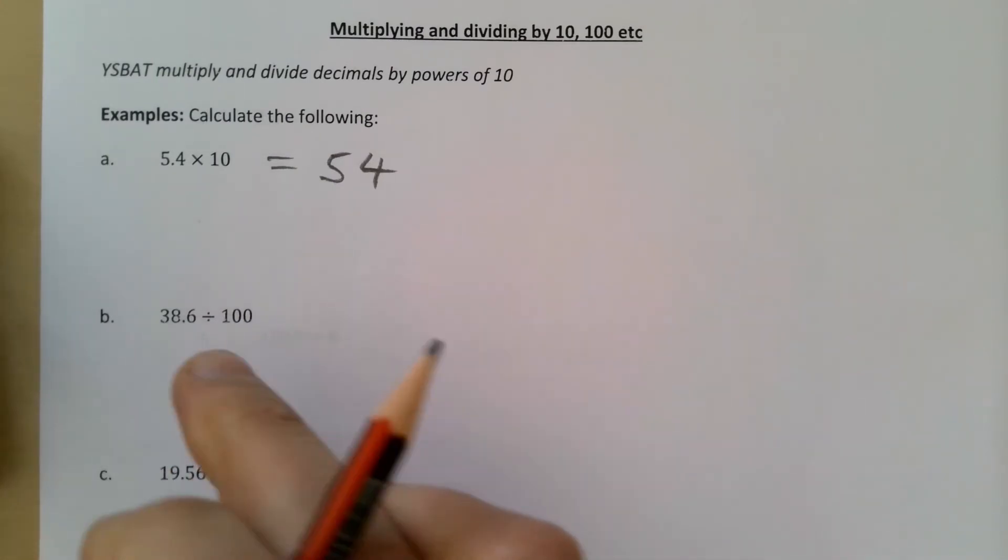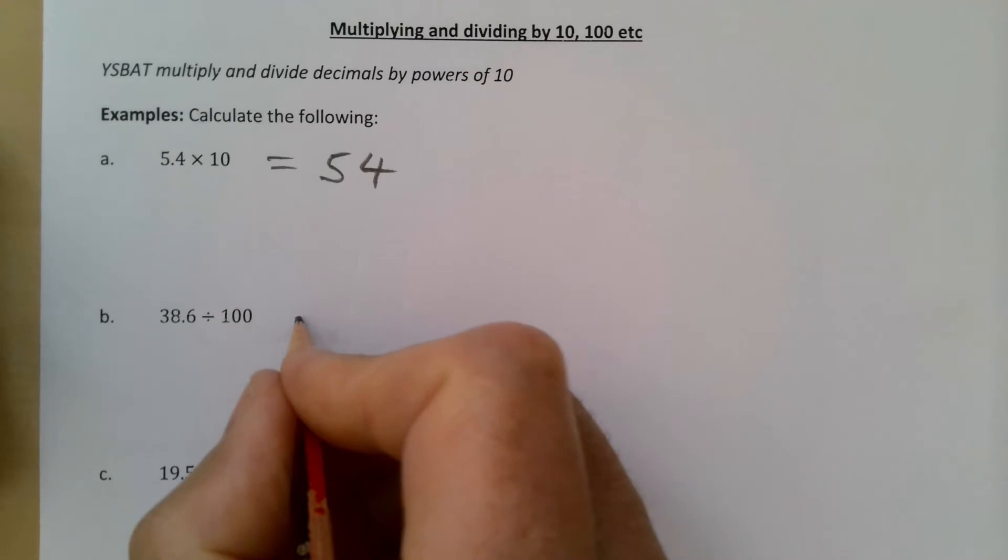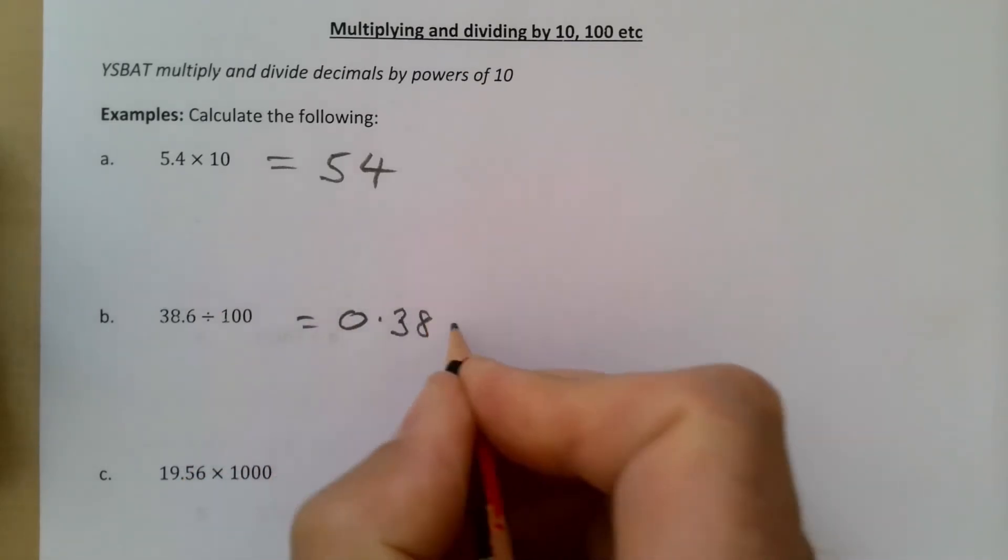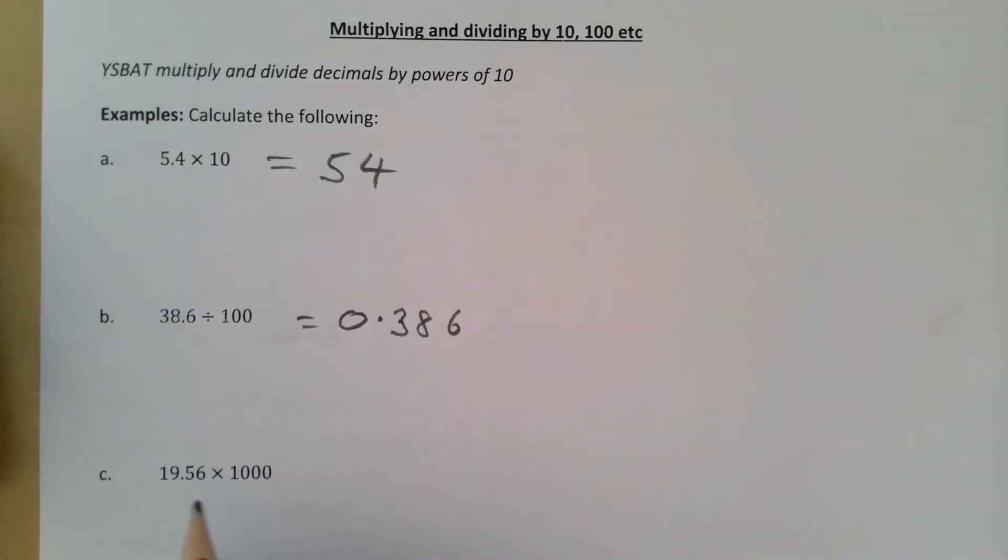need to move the number down. We don't move the decimal point up, we move the number down. This is 0.386. And then 19.56 times by a thousand, so we need to move the number